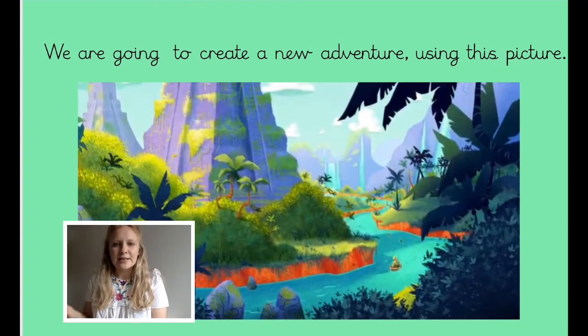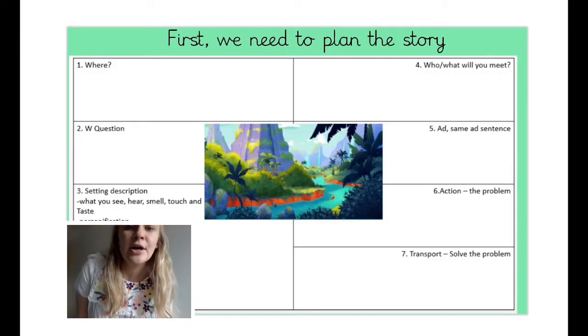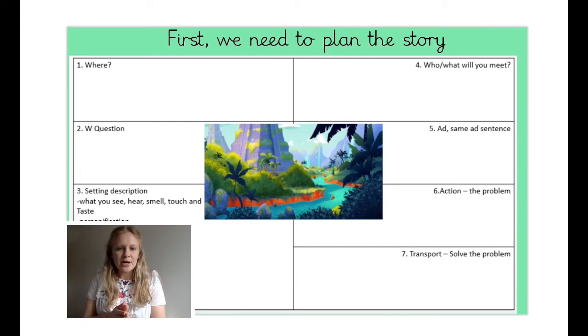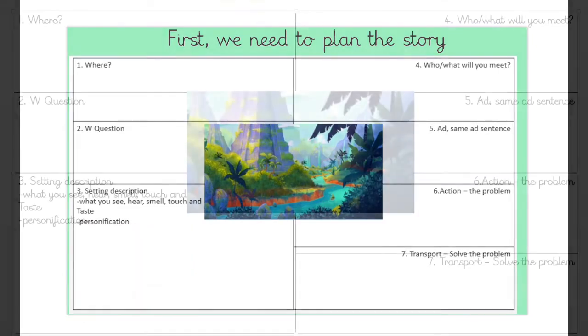Using this picture, we are going to create the plan. The plan looks like this - we've got seven parts and they all need completing. Some of them have a bit more information than others, and some ask for a specific sentence type because we're still looking at our same ad sentence.